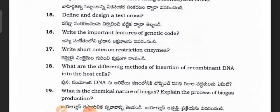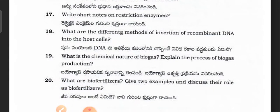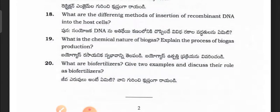Write about the important features of the genetic code. Write short notes on restriction enzymes. What are the different methods of insertion of recombinant DNA into the host cells? What is the chemical nature of biogas? Explain the process of biogas production. What are bio fertilizers? Give two examples and discuss their role as bio fertilizers.